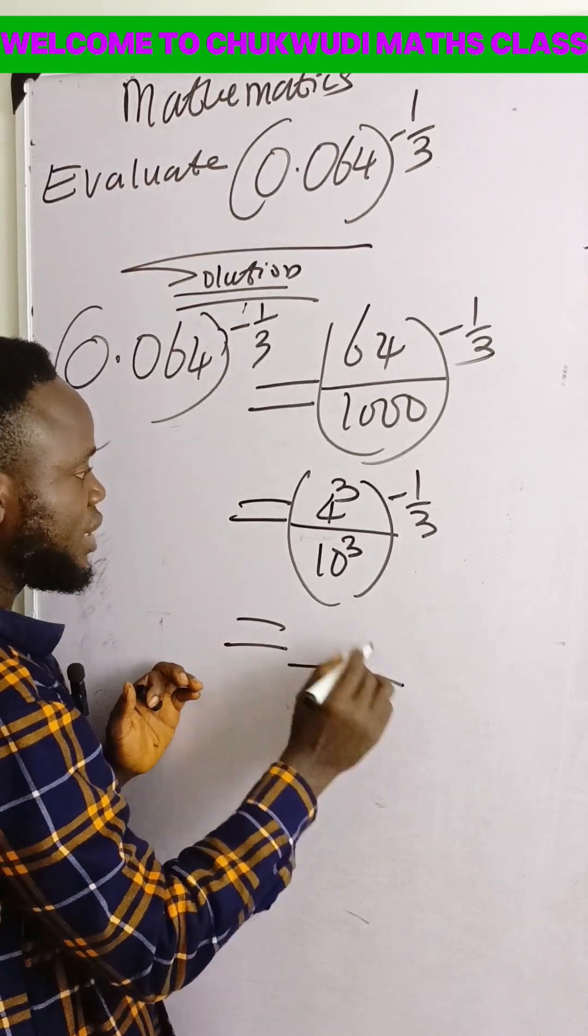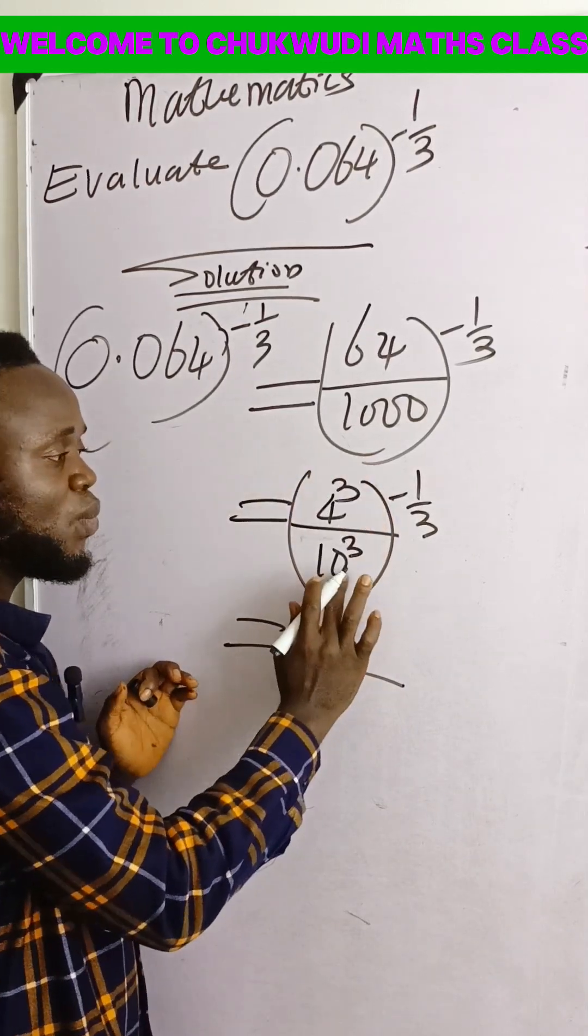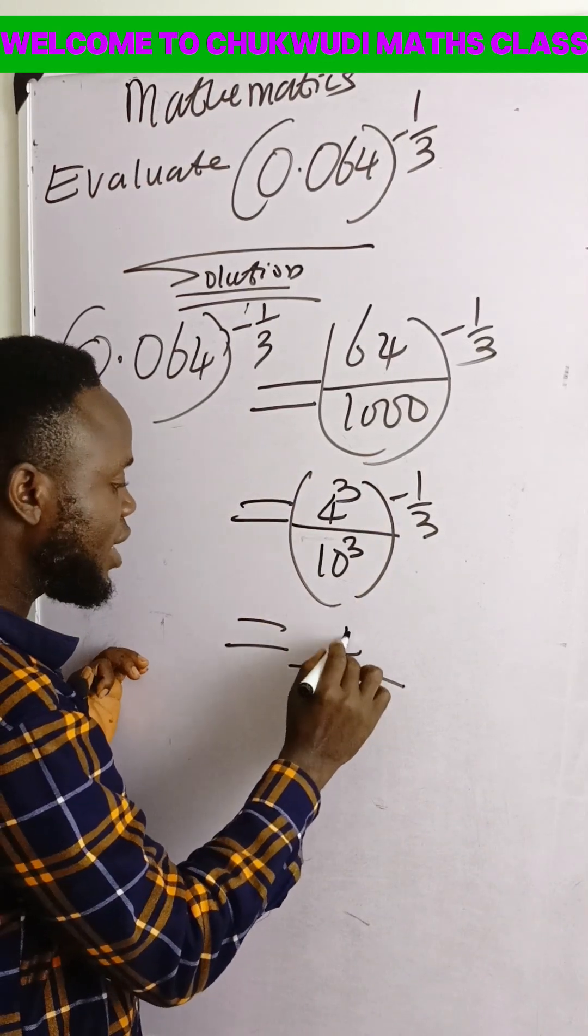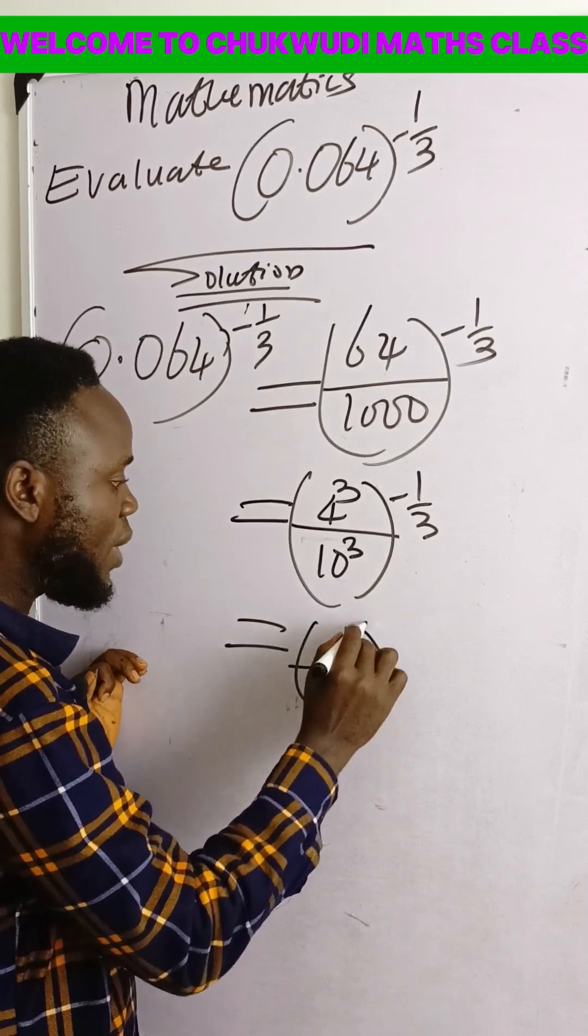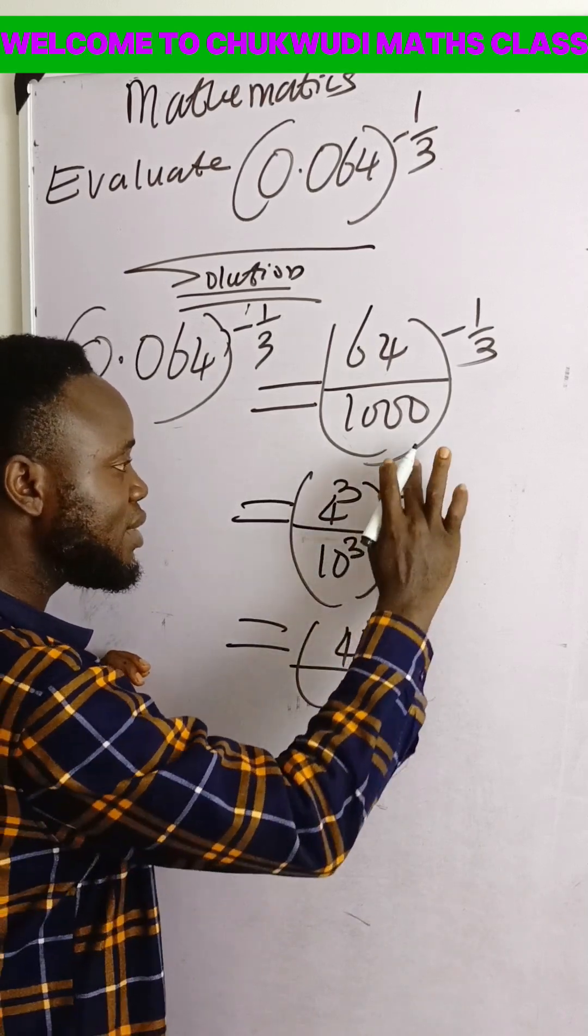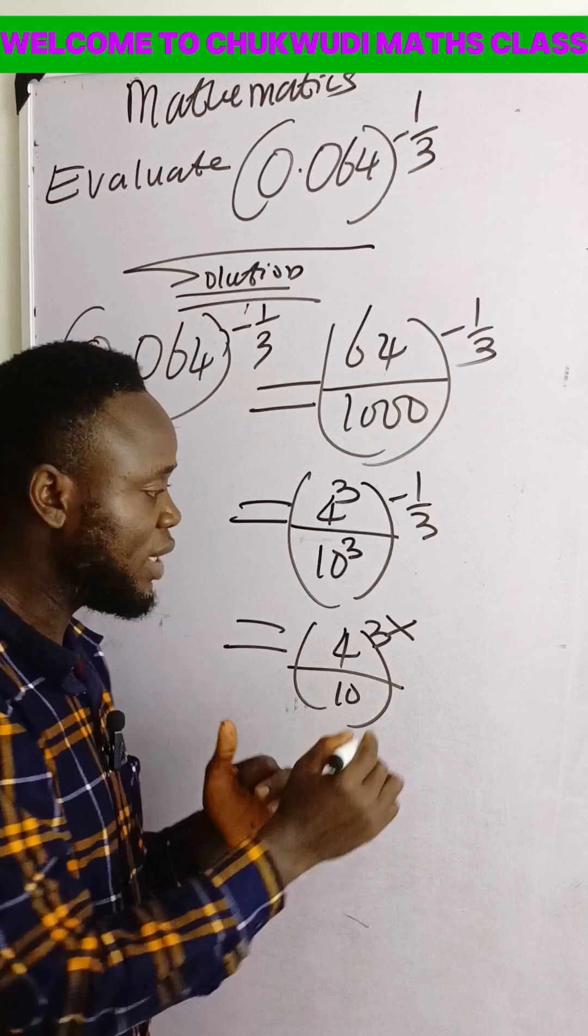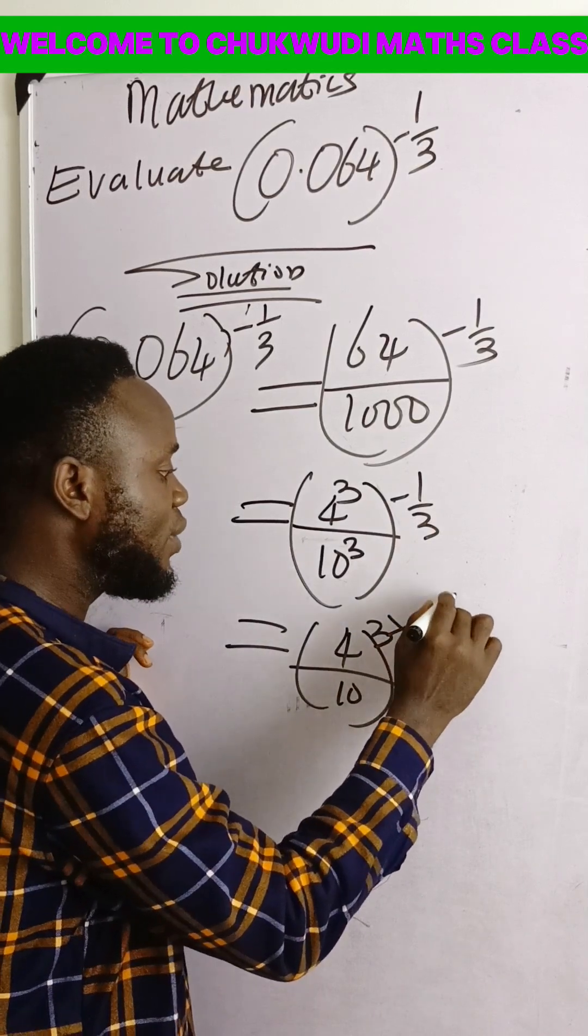This is equal to, since the power of this one and this one are the same, we can now write 4 over 10 raised to the power of 3, and remember that it has raised to the power of minus 1 over 3. You write raised to the power of minus 1 over 3.